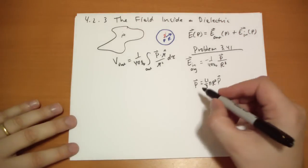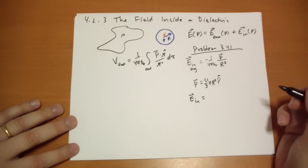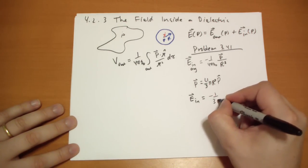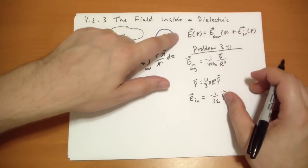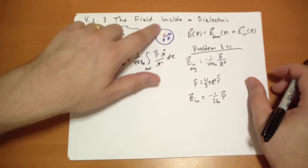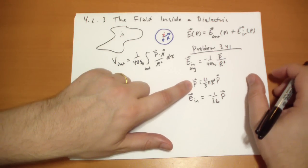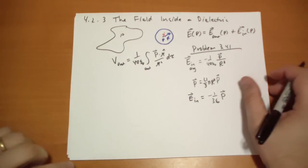So plugging that in then the electric field, the average electric field on the inside is equal to negative 1 over 3 epsilon 0 times the polarization of the stuff within the sphere. Now the polarization is an average. Because this is the total dipole moment we divide that by the total volume and we get the polarization. It's constant. The polarization does not change within that sphere.